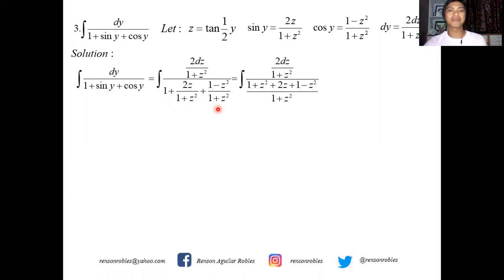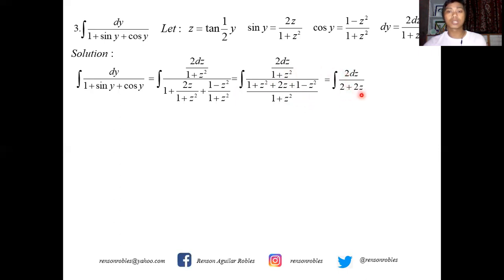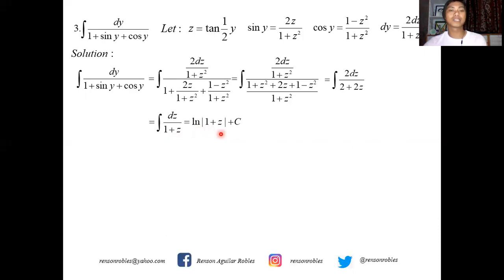Simplifying: writing the denominator as one fraction with LCD (1+z²) gives 1+z² + 2z + 1−z², which equals 2 + 2z since the z² terms cancel. The integral becomes 2dz over (2 + 2z). Factoring 2 from numerator and denominator cancels, leaving the integral of dz over (1 + z), which integrates to ln|1 + z| + C.